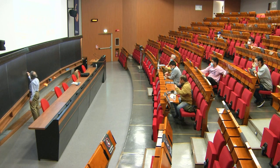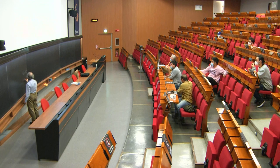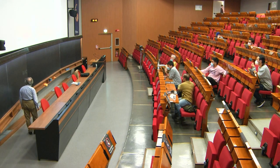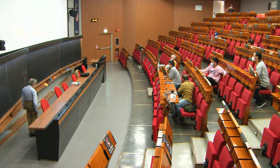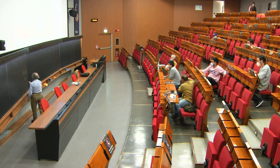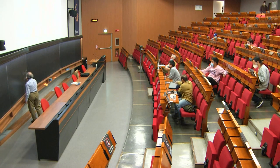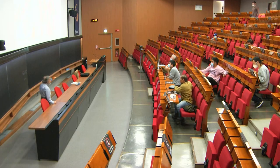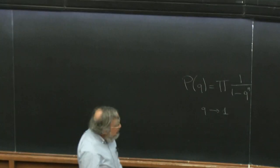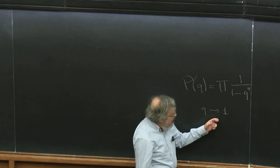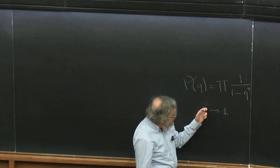I explained how you could find the asymptotics of the product (1 minus q to the n), which of course we know is a modular function as q goes to one, using the Euler-Maclaurin method, and that has applications to the circle method, and later I'll come back to this in the course.